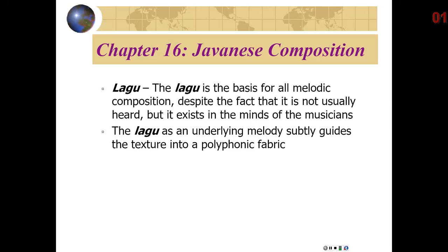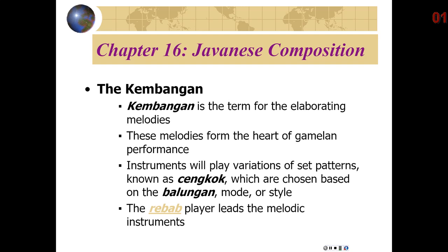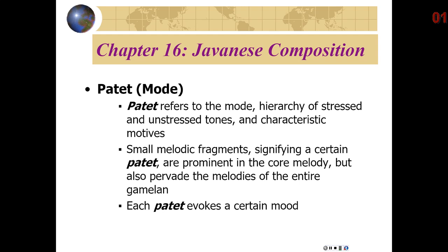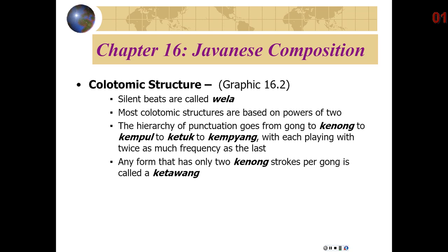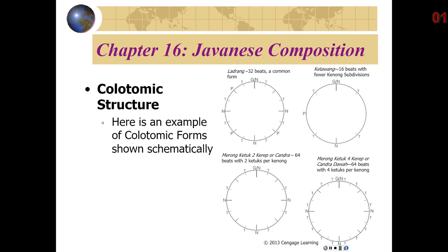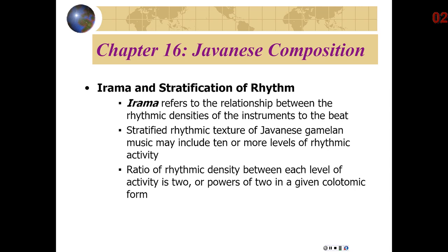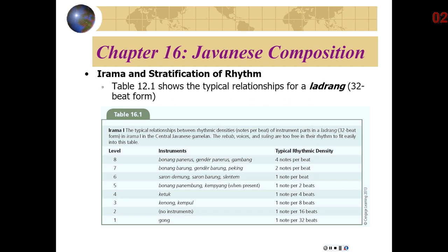A lot of the terminology here is valuable to know, but it's somewhat beyond the scope of what we're doing — more in the realm of a 300-level course in Javanese and Balinese music. For instance, knowing what a colotomic structure is seems important, but knowing that silent beats in the Javanese tradition are called 'wayla' is less essential. Here are examples of different 32, 16, and 64 beat colotomic structures showing what is stressed and what is not. There is a lot of stratification of rhythm — layers upon layers — in a way not typical in Western music. Here's a table showing typical relationships for a 32-beat form of the ladderang.